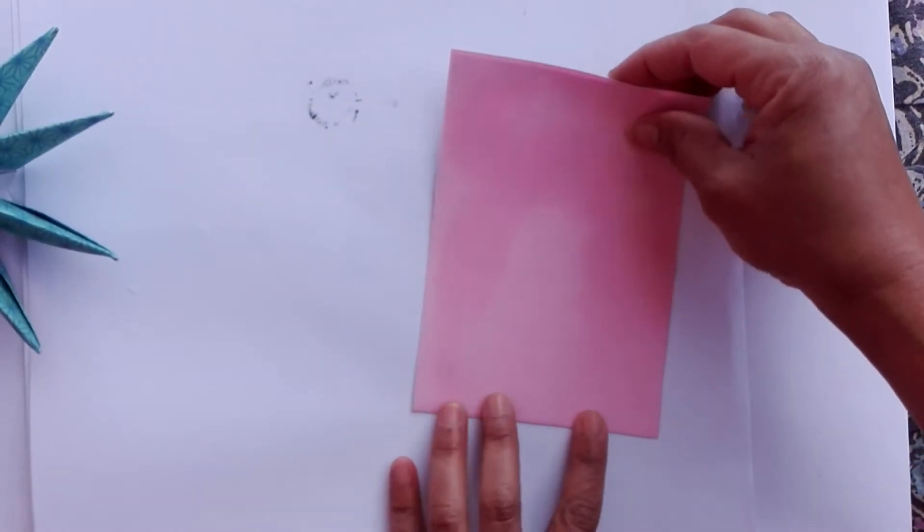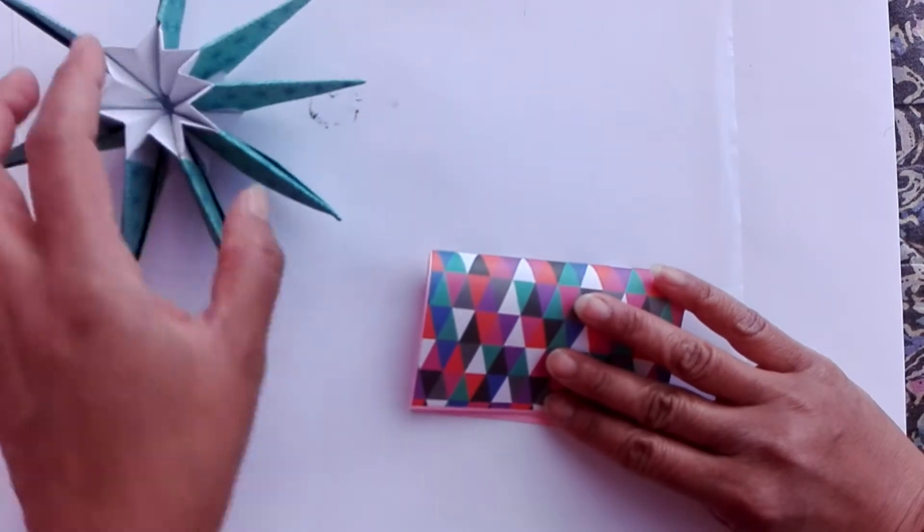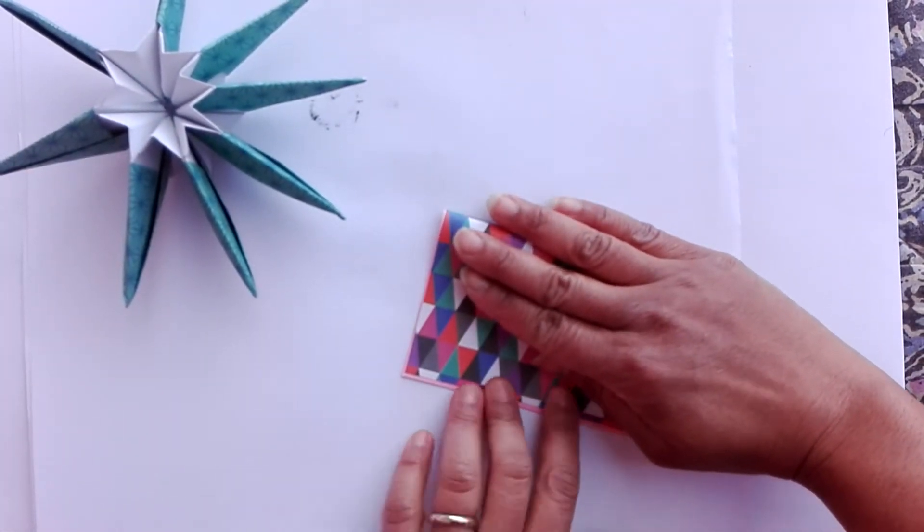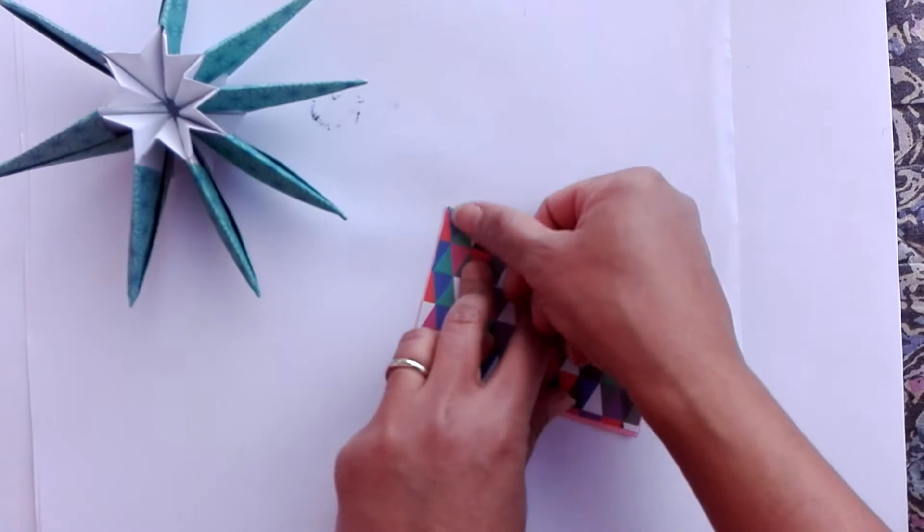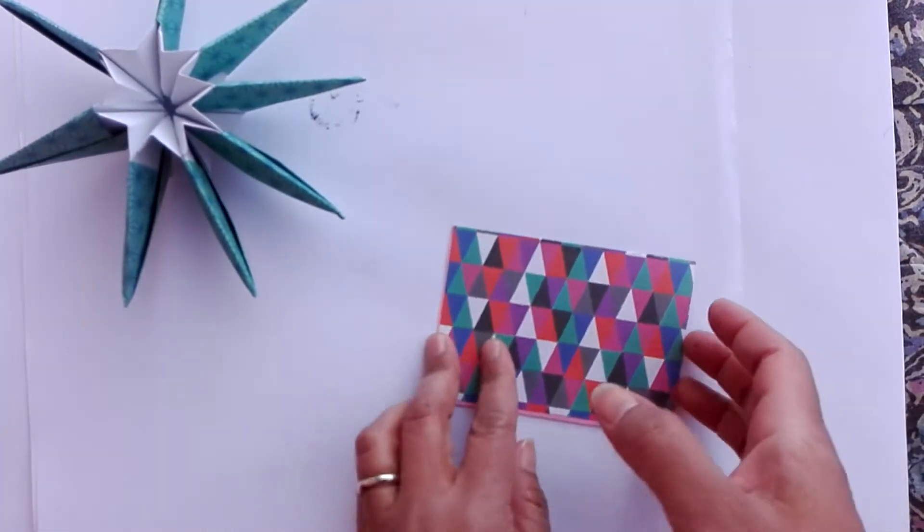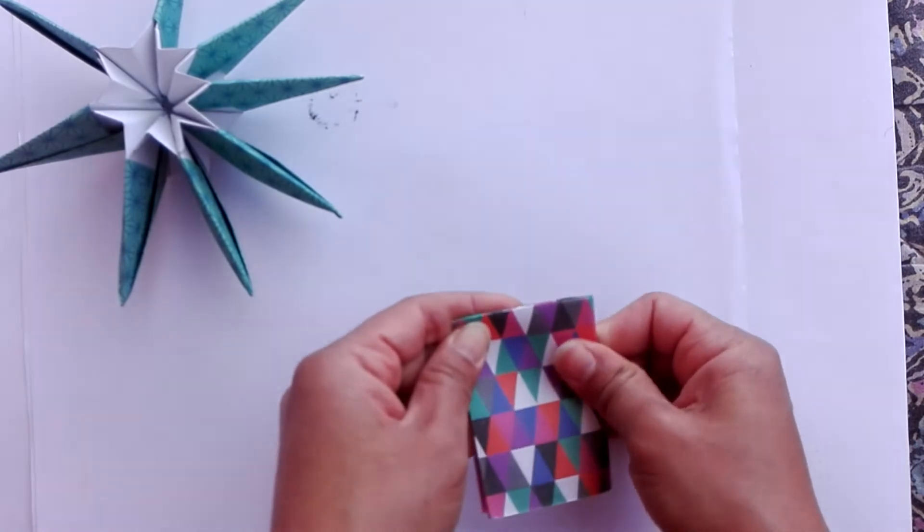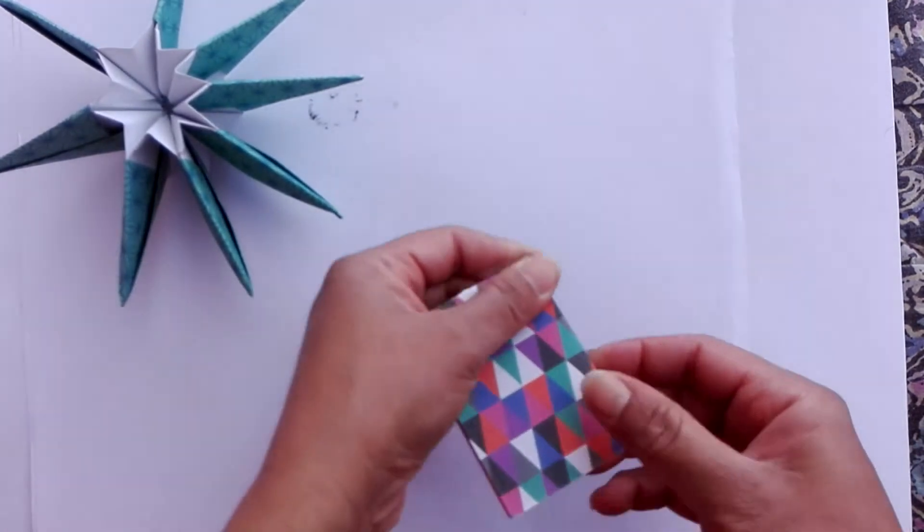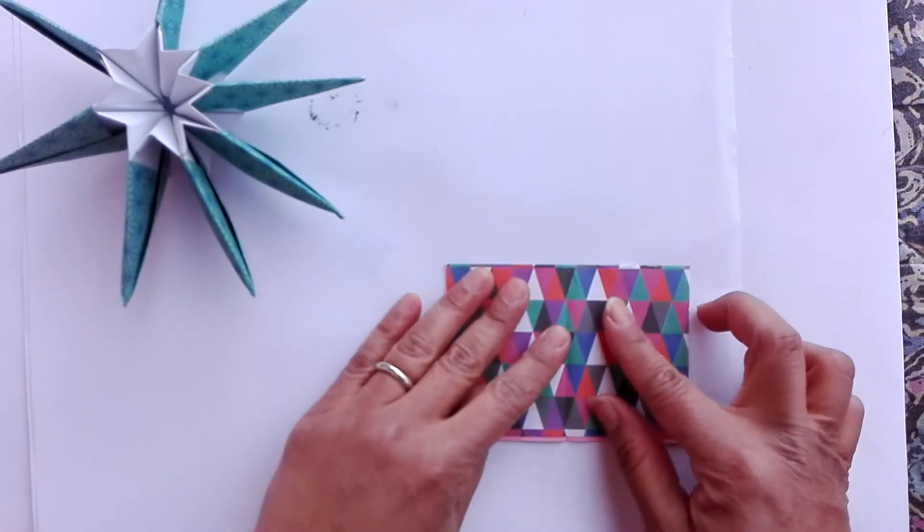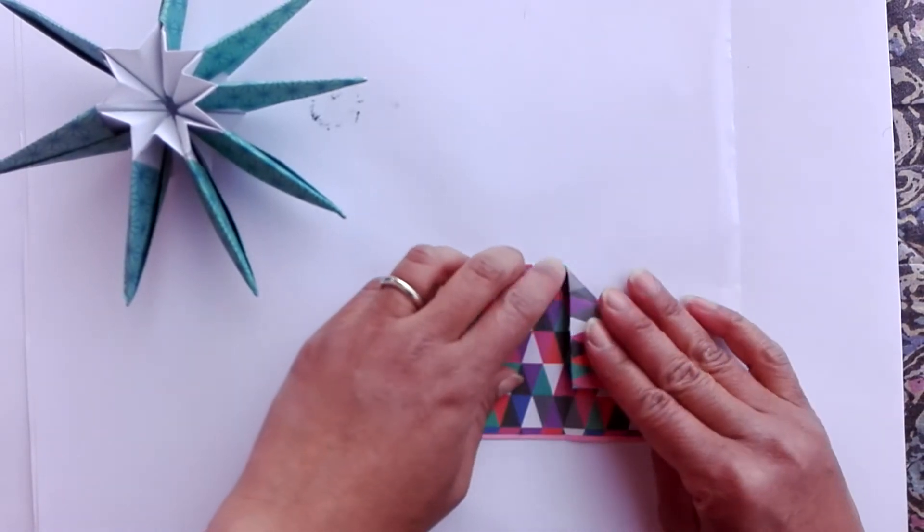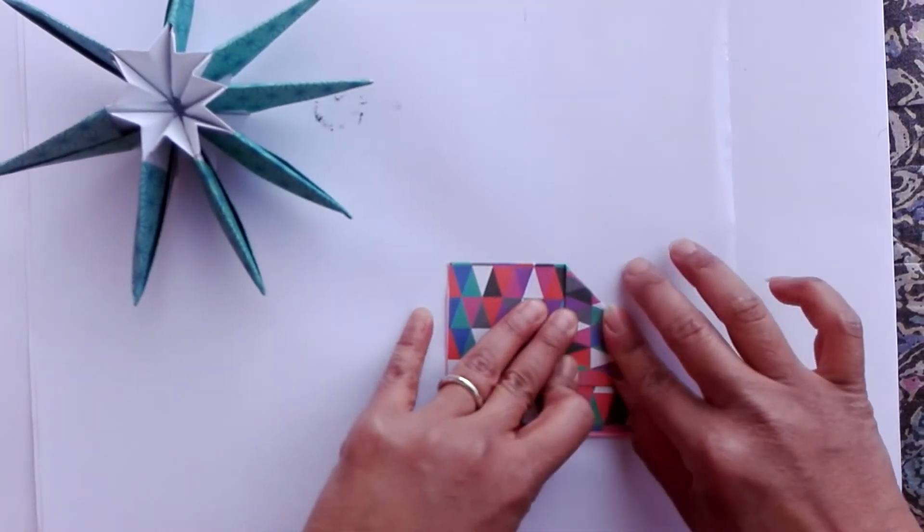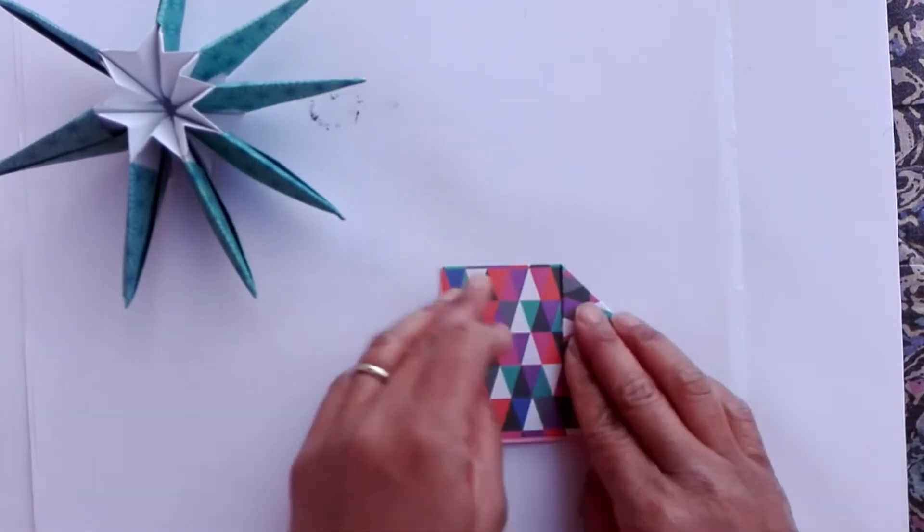Let's fold the paper in half, then fold it in half one more time. Open it and bring this side to the center, and this side to the center.